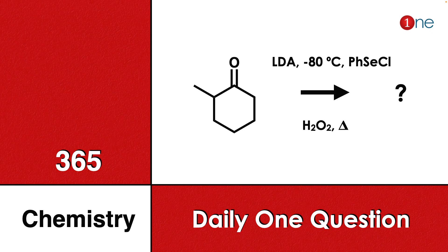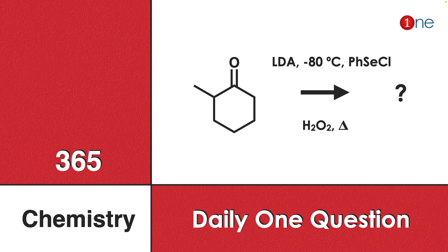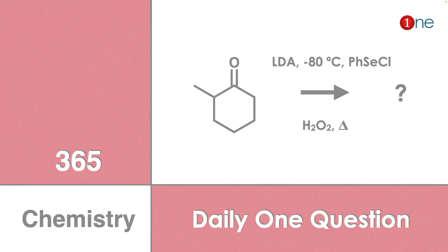Welcome to One Chemistry. This is the 365 Chemistry series — one daily question for you. Here you have cyclohexanone with a methyl group, reacting with LDA and phenylsilyl chloride. Further, you are using hydrogen peroxide and heating it up. You have to find what will be the final product.